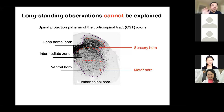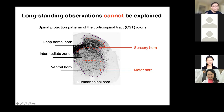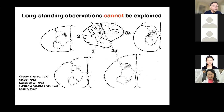However, when we take a closer look at this textbook model, some long-standing observations are not easily explained. For example, I show you a transverse spinal section with corticospinal tract (CST) axons labeled using the Emx1-Cre reporter line. Besides projecting to the intermediate and ventral spinal cord — known for controlling motor functions — those CST axons also densely terminate in the deep dorsal horn where a variety of mechanosensory afferents innervate. Interestingly, such sensory horn projection pattern is evolutionarily conserved in all mammals.